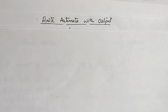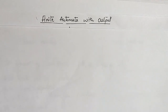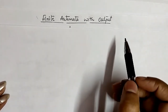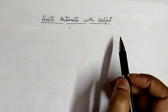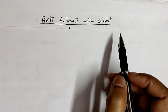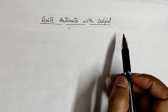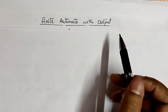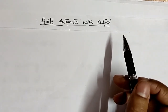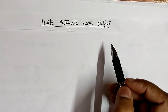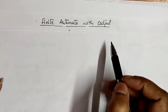Hello friends, the next topic is finite automata without output. In my previous videos we already discussed the first type of finite automata that is without output, in which we covered DFA, NFA and epsilon NFA. Now finite automata with output is of two types.